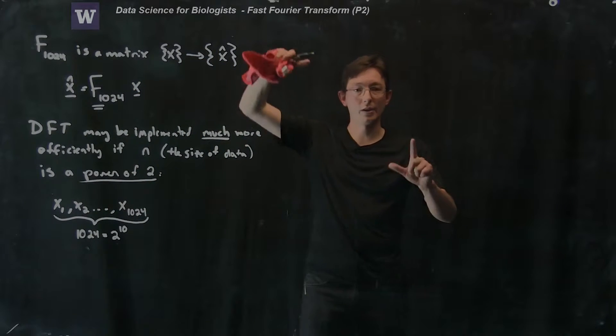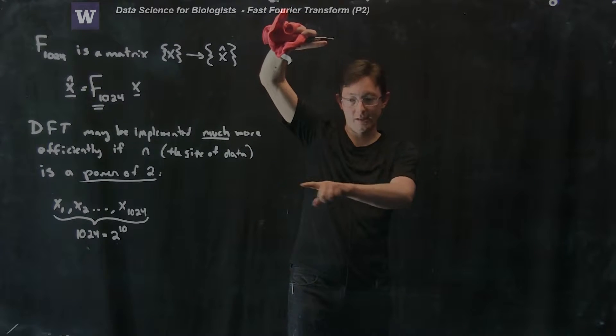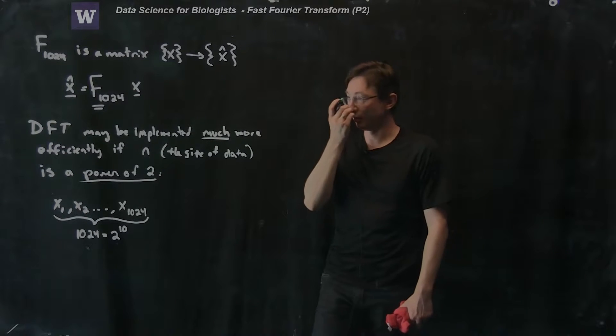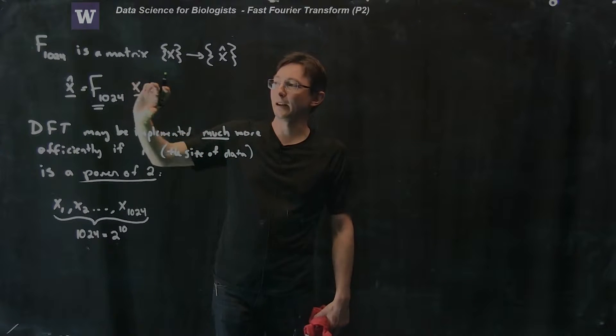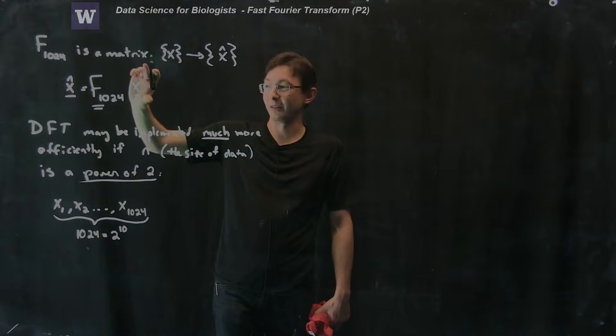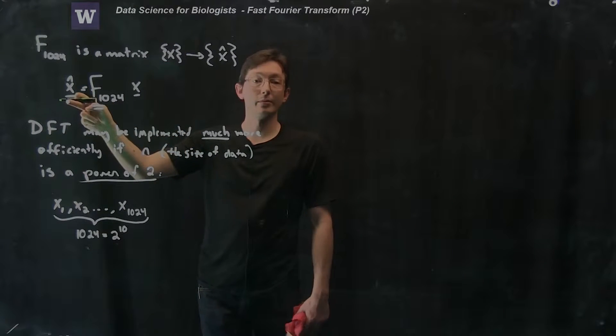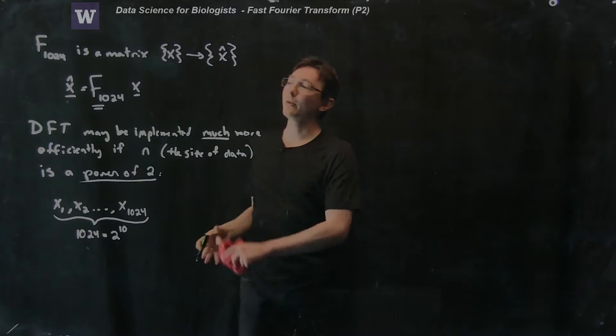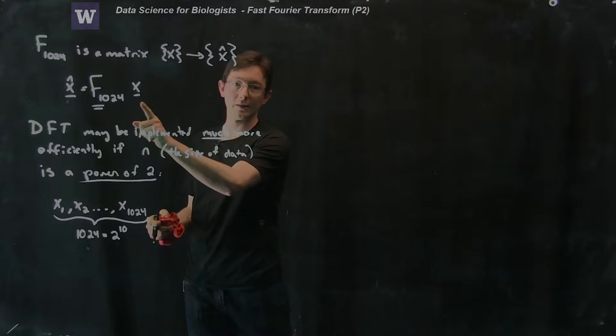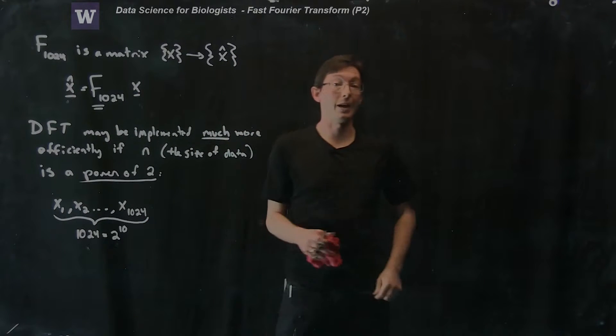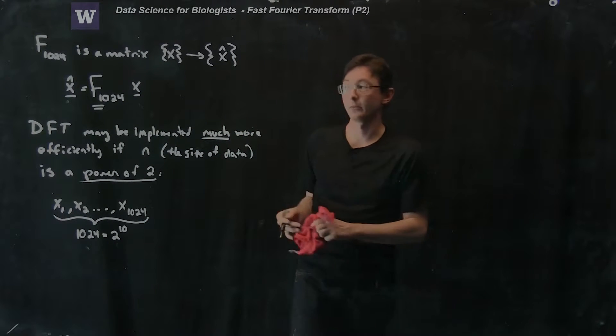For the discrete Fourier transform you build this big matrix that's 1024 by 1024. You build it out of all those frequencies that I showed you. Then if I take that and multiply it by my signal, I get my frequency components X hat. And what I'm going to show you is that if the size of X is an exact power of 2, I can compute this much more rapidly.